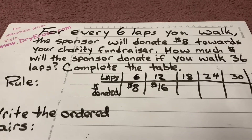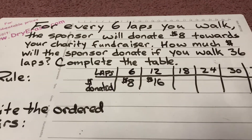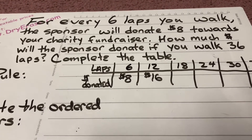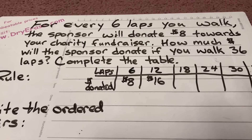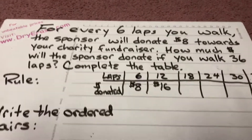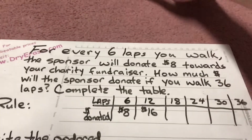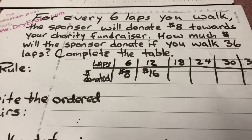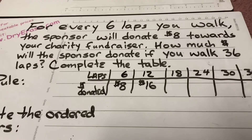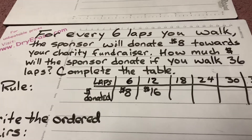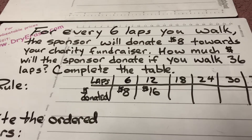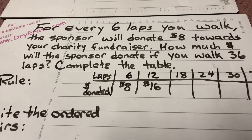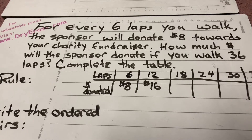Okay, here we go — lesson 12.7, which brings chapter 12 to an end. For every six laps you walk, the sponsor will donate eight dollars towards your charity fundraiser. How much money will the sponsor donate if you walk 36 laps? Complete the table.